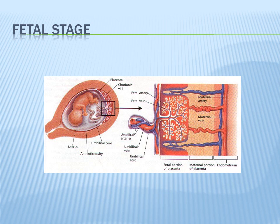The chorionic villi feed into the umbilical cord. The fetal veins make up the umbilical vein and the fetal arteries make up the umbilical arteries. Oxygenated blood actually travels through the umbilical vein into the fetus's inferior vena cava, whereas the umbilical arteries come off the iliac veins of the fetus and take deoxygenated blood from the fetus back to the placenta. The PaO2 for the umbilical arteries is around 20, and for the umbilical veins is around 30.